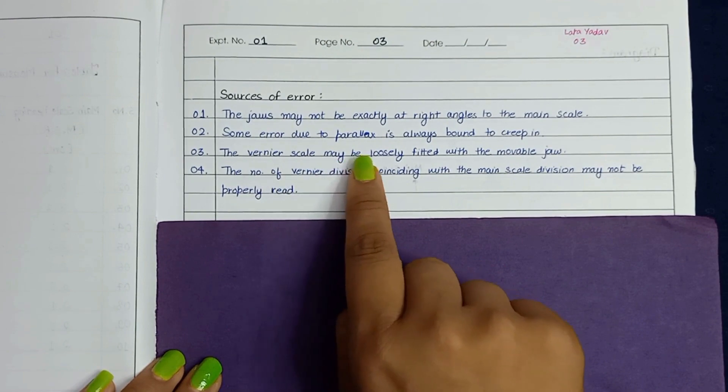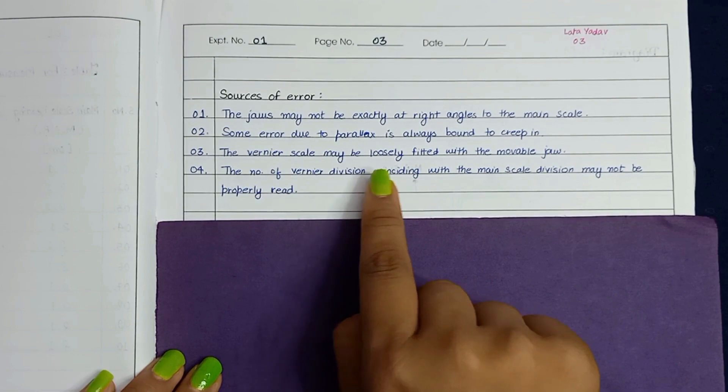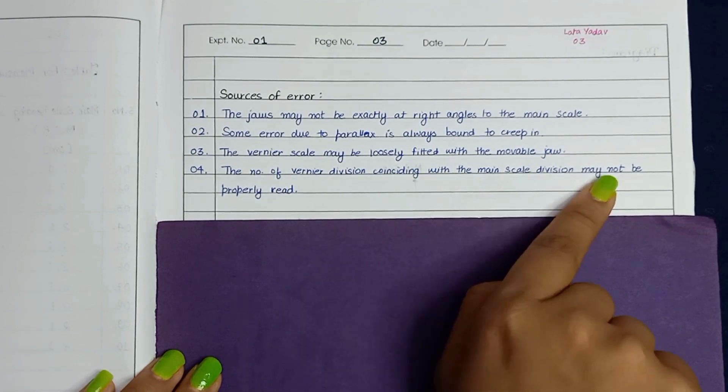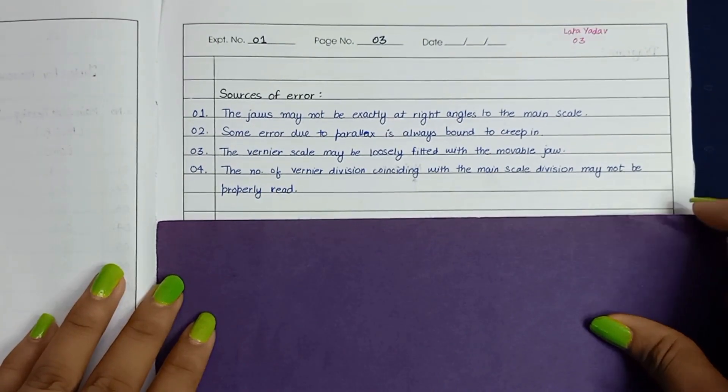Third, the vernier scale may be loosely fitted with the movable jaw. Fourth, the number of vernier divisions coinciding with the main scale division may not be properly easy. So these are the sources of error of this experiment.